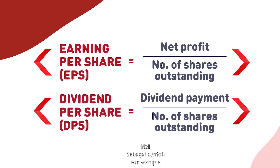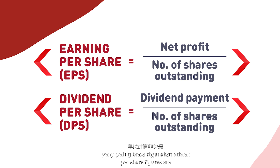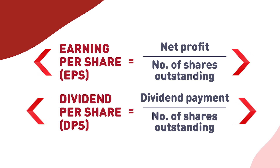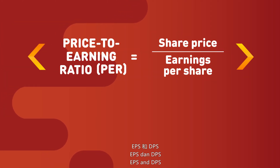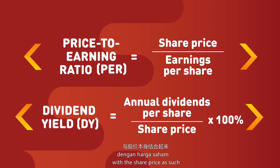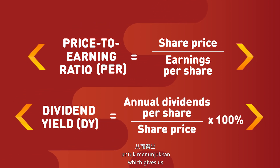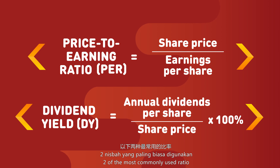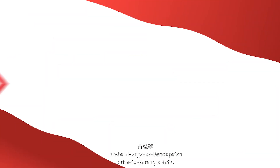The first step of ratio analysis is to convert the figures under study from the financial statements into a per share basis. The two most commonly used examples are Earnings Per Share (EPS) and Dividends Per Share (DPS). We then combine these per share figures with the share price to produce key ratios.